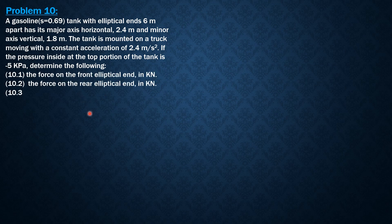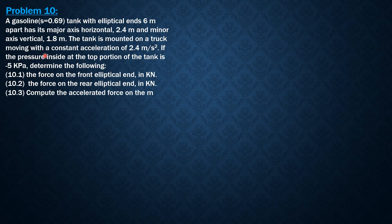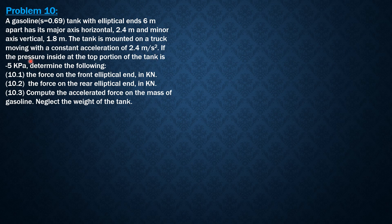The tank is mounted on a truck moving with a constant acceleration of 2.4 meters per second squared. If the pressure inside at the top portion of the tank is negative 5 kilopascals, there is a vacuum of negative 5 kilopascals because the tank should be closed.